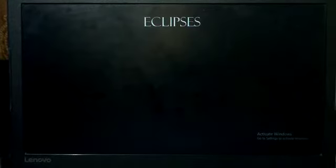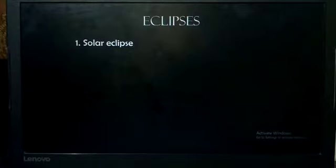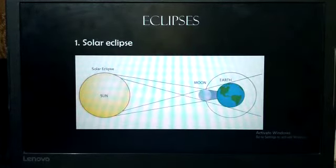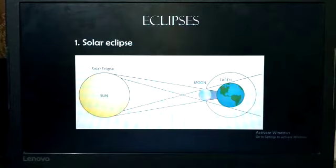So, the first one is solar eclipse. Solar eclipses can only occur during a new moon when the moon moves between earth and the sun.